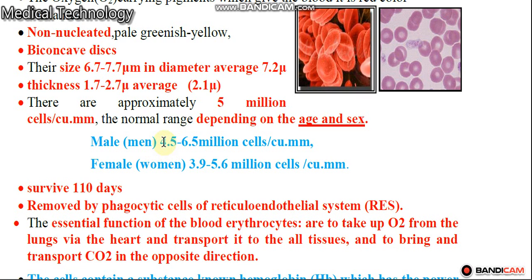We explained that if the RBC count becomes less than 4.5 million in males or 3.9 million in females, this is called anemia. If the number becomes more than the normal range in male and female, this case is called polycythemia.